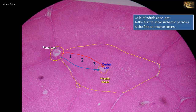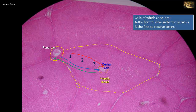Cells in zone 1 are also the first to regenerate. Bile flows in the opposite direction — it passes through a network of biliary canaliculi, not sinusoids, and reaches a bile duct in the portal triad, carrying bile in the opposite direction of blood flow, from the liver to the duodenum. Thus, when there is a biliary obstruction, such as a stone in the common bile duct, cells of zone 1 are the first to show morphological changes because they are closer to the tributary of the bile duct located in the portal triad.